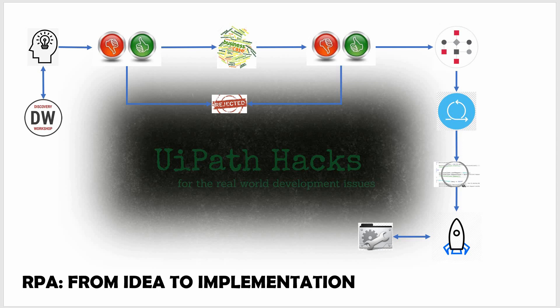We start on the left side with the initial idea, which could come from a discovery workshop or even just from one of the employees in the company. In the first part, it goes through some high-level evaluation, and then there is a decision of go or no go. We'll discuss in a minute the reasons why we might want to drop an idea from the start. If it seems feasible but the effort and costs are high, it makes sense to build a business case and have a steering committee decide if the idea is worth implementing.